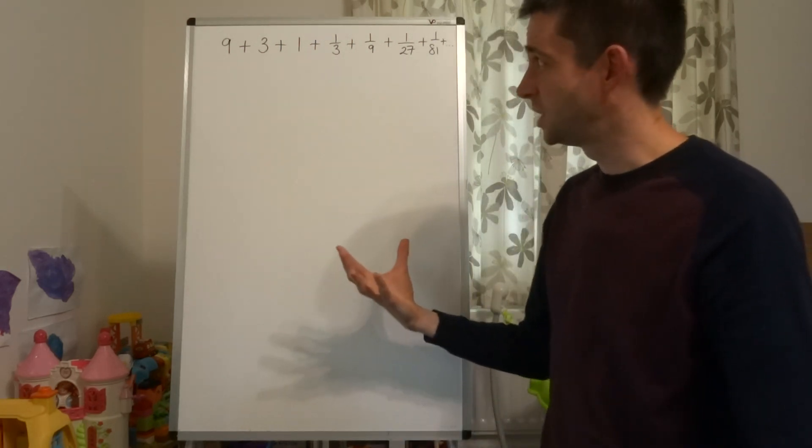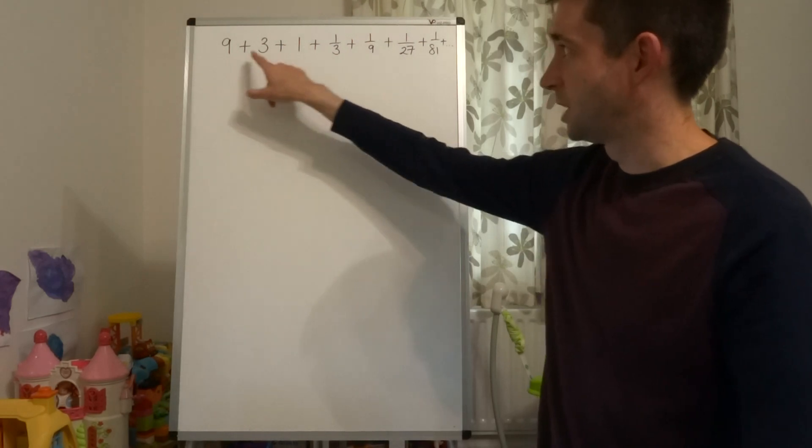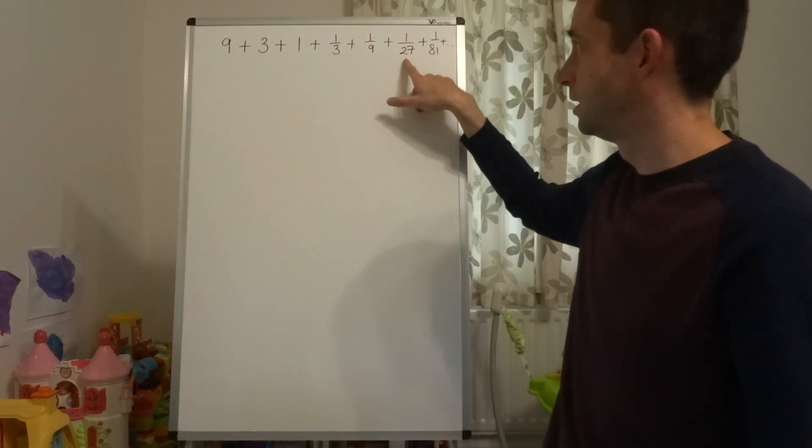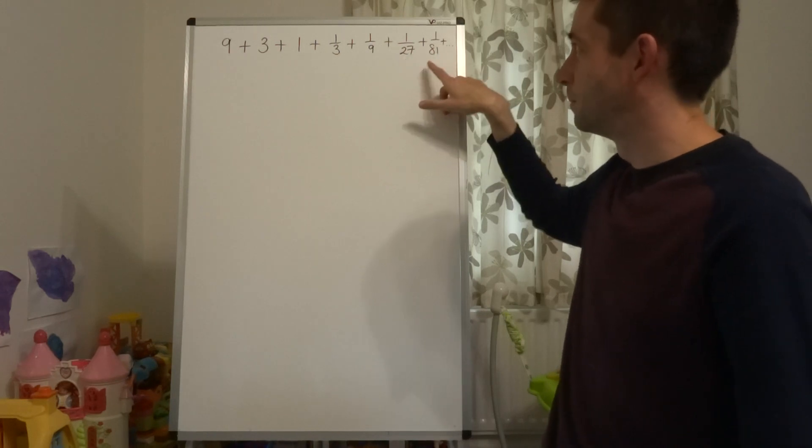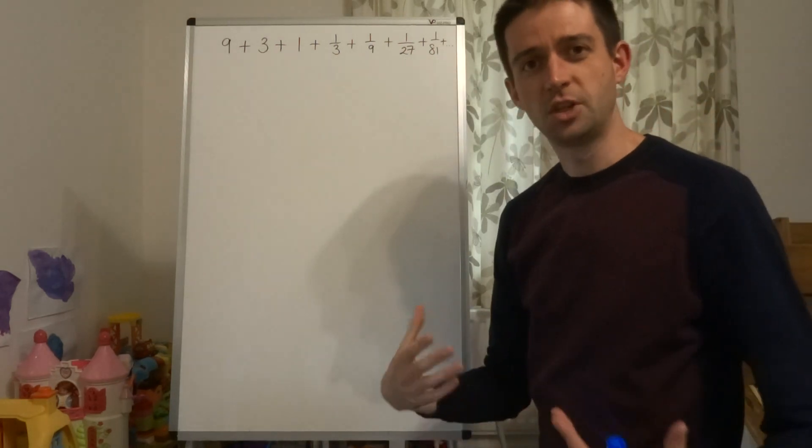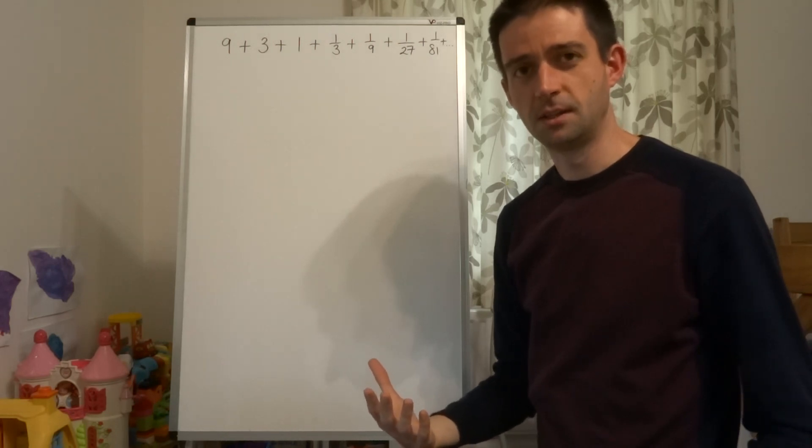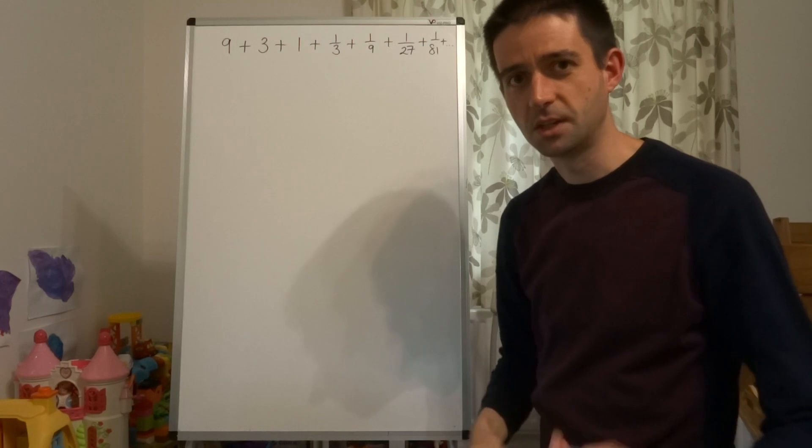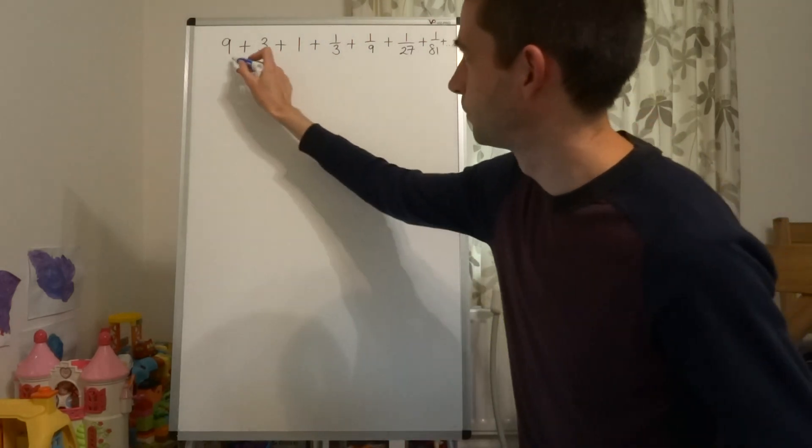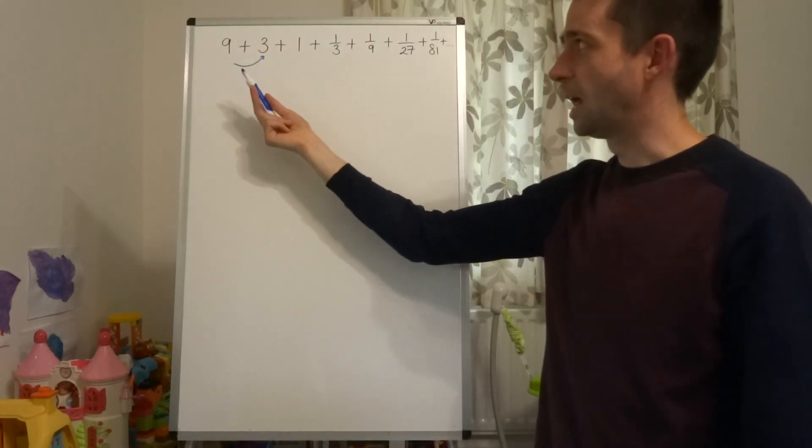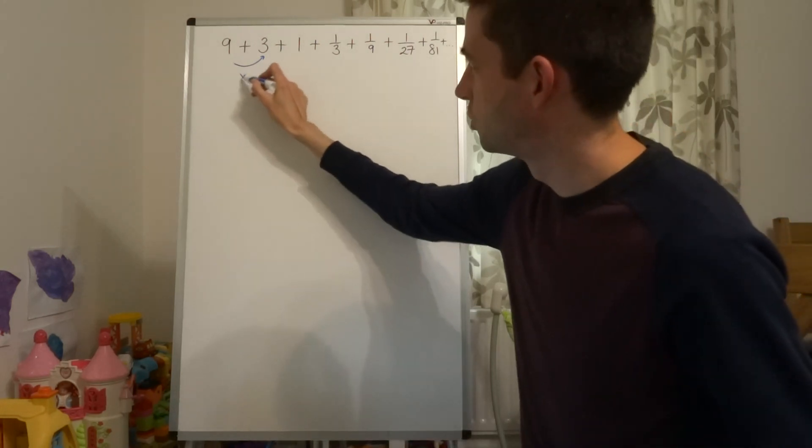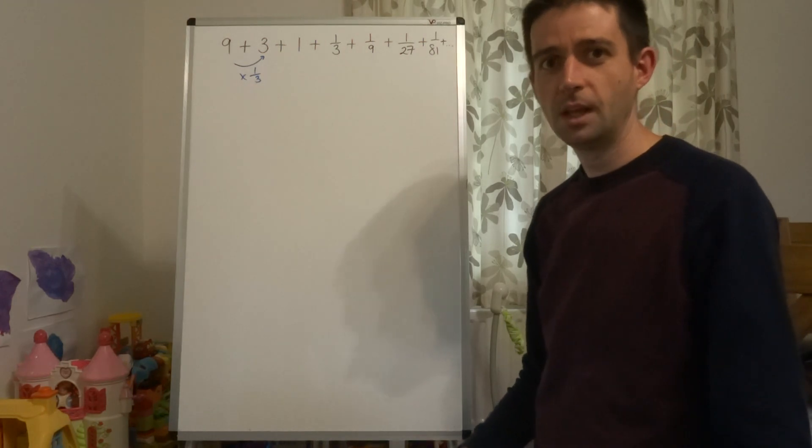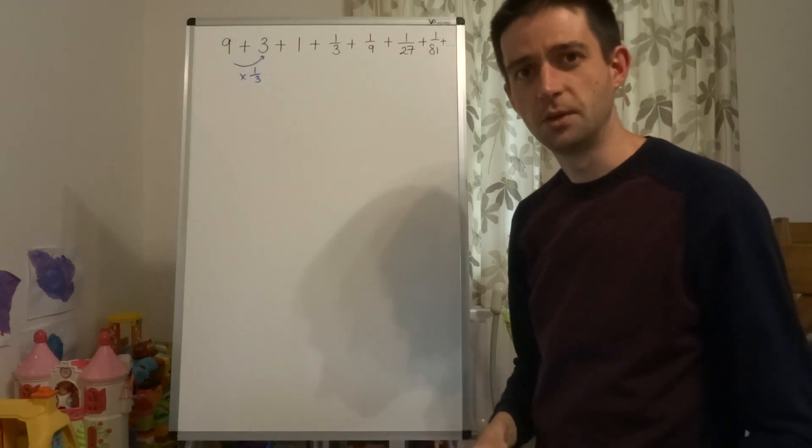Okay, so first of all, let's consider the series 9 plus 3 plus 1 plus 1 third plus 1 ninth plus 1 over 27 plus 1 over 81. And let's just have a think about what r is for this sequence. What are we multiplying each term by to get the next number in the sequence? Well, you may be looking at that and thinking, we're dividing by 3, which is true, but that is the same as multiplying by 1 third. So the common ratio of this series is 1 third.